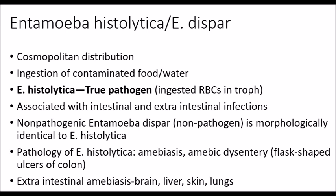Entamoeba histolytica is associated with both intestinal and extraintestinal infections. Entamoeba dispar, which is a non-pathogen, is morphologically identical to E. histolytica. The pathology of E. histolytica is known as amoebiasis, which is amoebic dysentery, and you may see flask-shaped ulcers of the colon. If the amoeba leave the intestinal tract, we call that extraintestinal amoebiasis — a very serious infection that can go to the brain, liver, skin, and lungs.